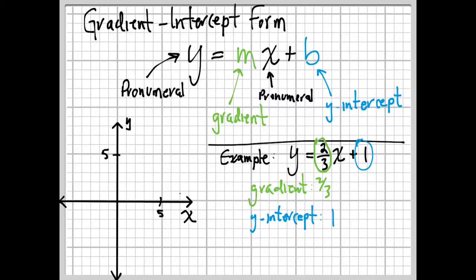Now we can use this information to very easily graph this relation. We do that first by plotting the y-intercept. We go on the y-axis to the point one on the y-axis, and we plot that point. Now, we use the gradient to figure out where the next point will be.